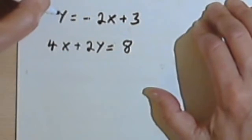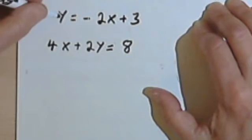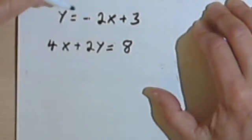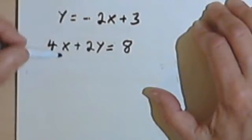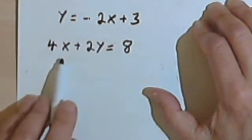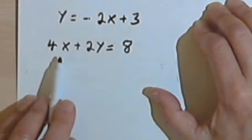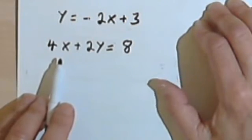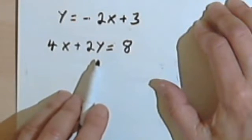So let's say you've got y equals negative 2x plus 3 and 4x plus 2y equals 8. And you decide that since the first one is in y equals mx plus b form, or the slope-intercept form, you're going to turn the second one into slope-intercept form also and solve by graphing.